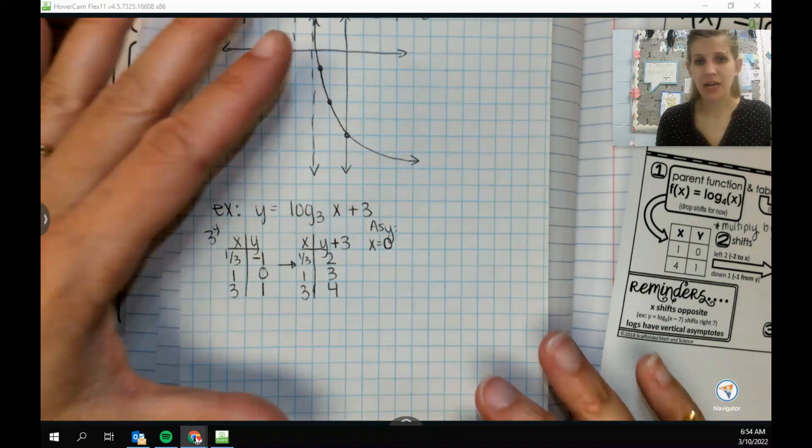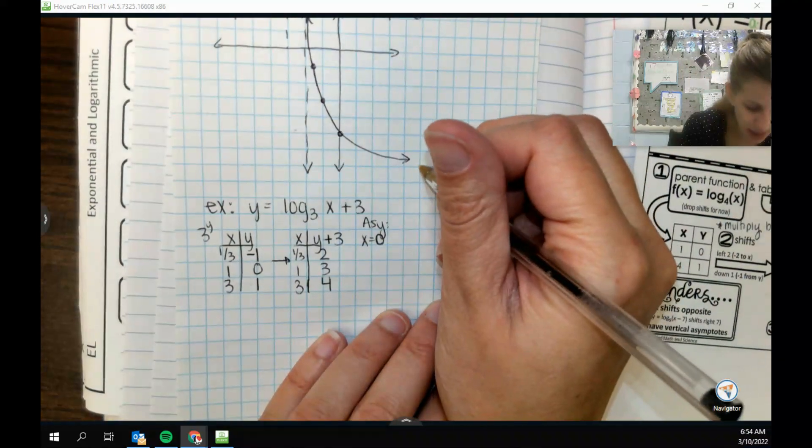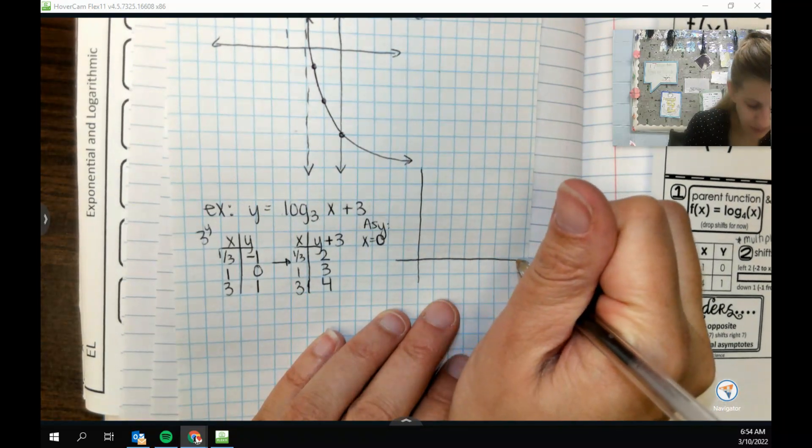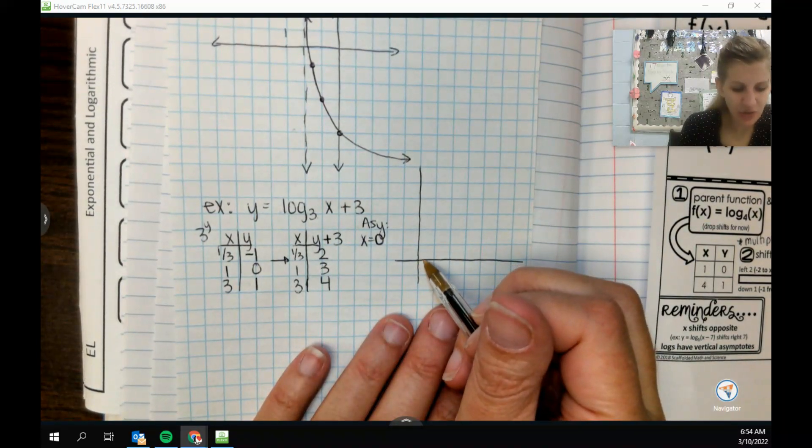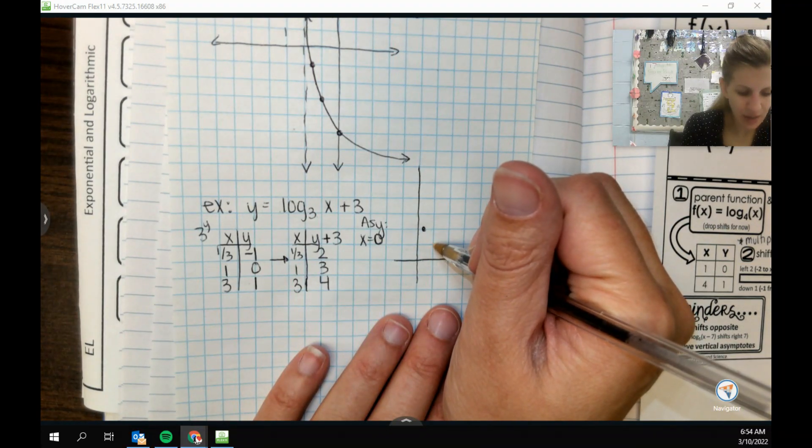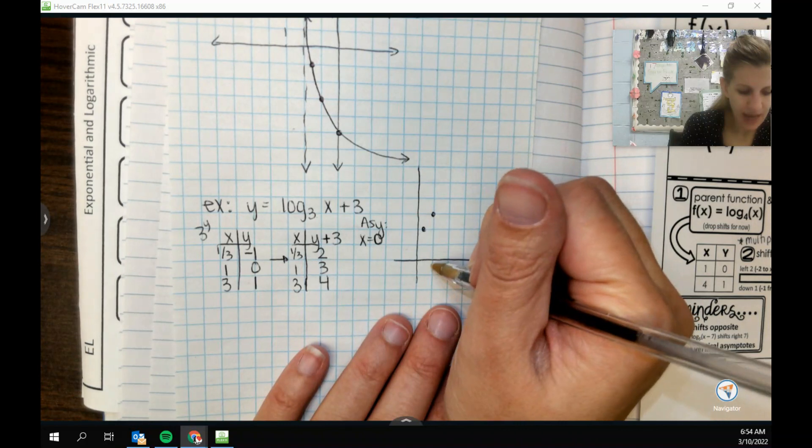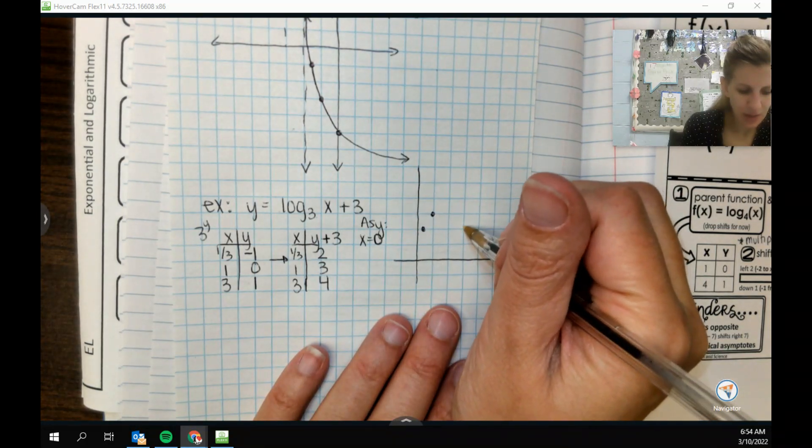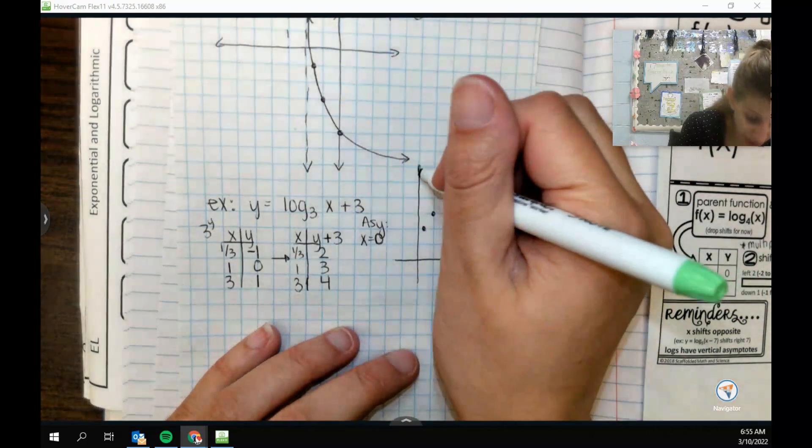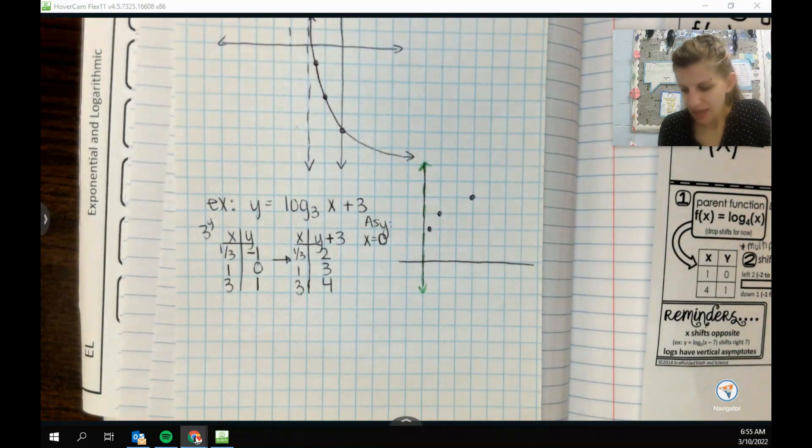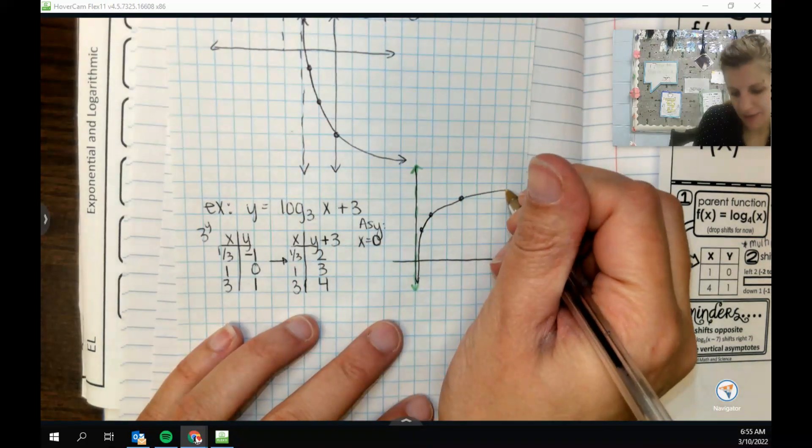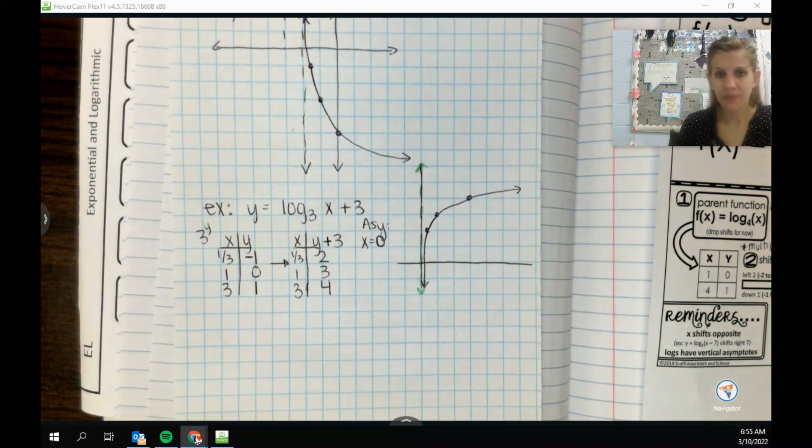I'm going to see if I can't maybe fit one more in here after this, because this is kind of a small one. So let's get a little graph here going. We need positive, positive. Okay. So my first point is 1 third, so just a little bit, comma 2. 1, 3. And then 3, 4. 1, 2, 3. Okay, I can totally see that one better. And again, here I have my asymptote, so I'm going to draw that with some color. Yeah, so I can totally see going this way, we're going to hug our asymptote. And then going this way, we're kind of slowing down. Cute.